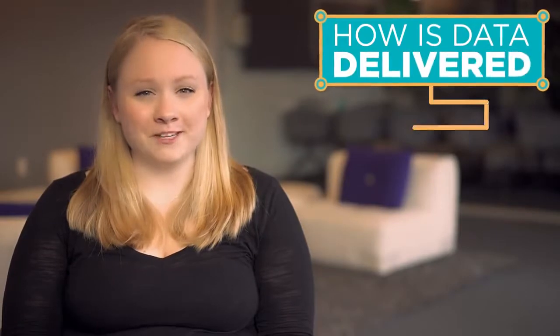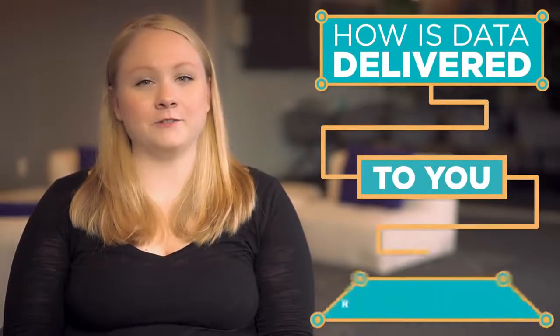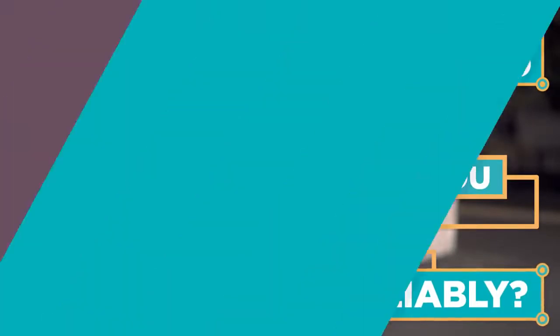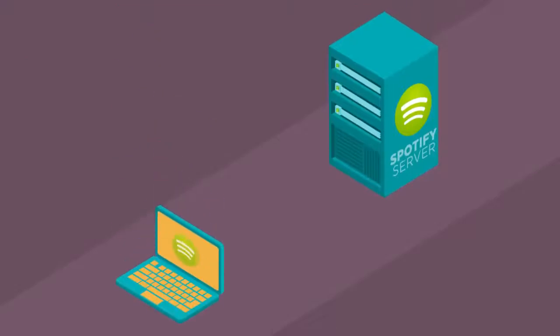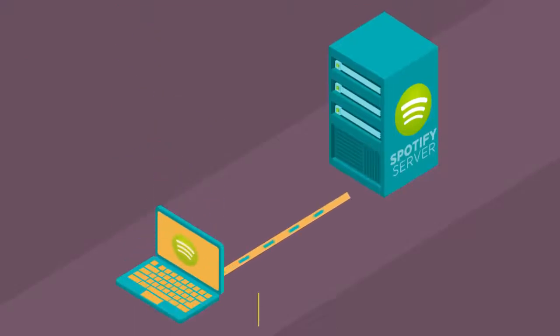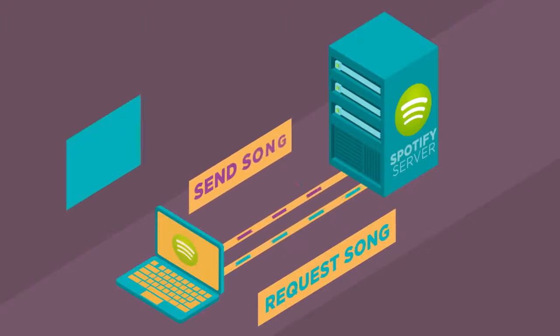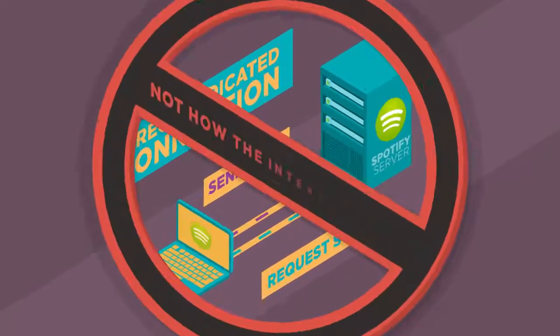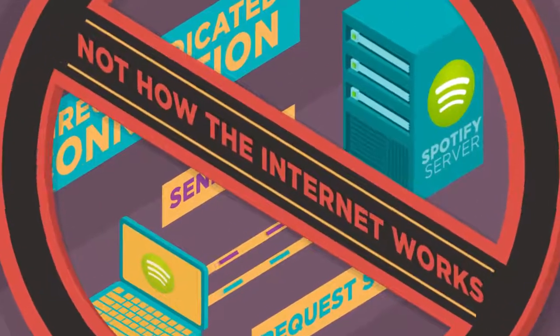The sheer amount of information zooming around the internet is astonishing. How is it possible for every piece of data to be delivered to you reliably? Say you want to play a song from Spotify. It seems like your computer connects directly to Spotify's servers, and Spotify sends you a song on a direct, dedicated line. But actually, that's not how the internet works.